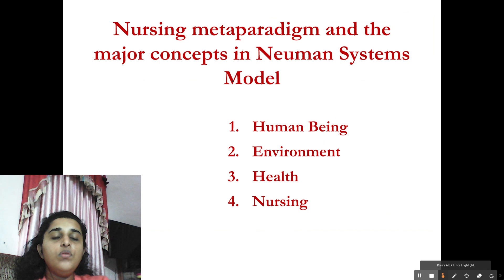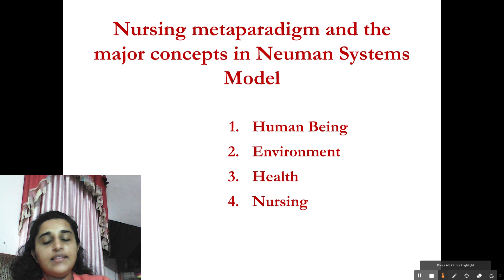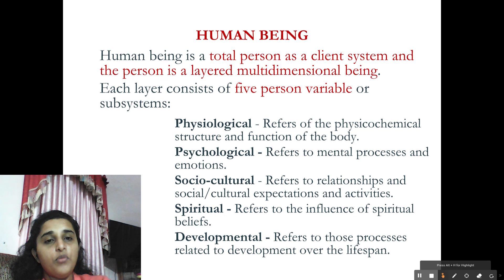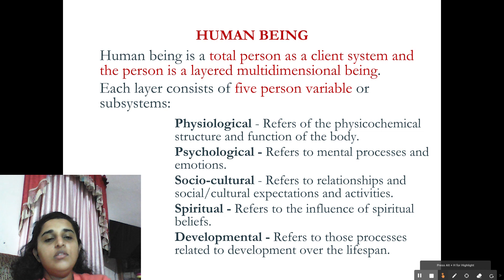Now we see the major concepts and nursing meta-paradigms in four areas: human being, environment, health, and nursing. According to this systems model, the human being is a total person as a client system — a layered multidimensional being. Each layer consists of five person variables or subsystems: physiological, psychological, sociocultural, spiritual, and developmental variables.